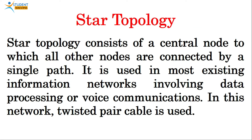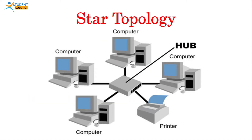The second topology is star topology. Star topology consists of a central node to which all the other nodes are connected by a single path. It is used in most existing information networks involving data processing or voice communications. In this network, twisted pair cable is used. Here is the diagrammatic representation of star topology, where all nodes are connected to a single hub.